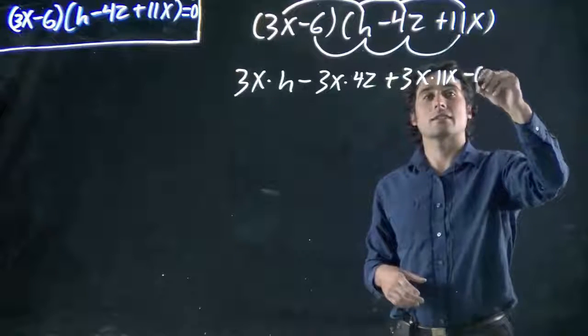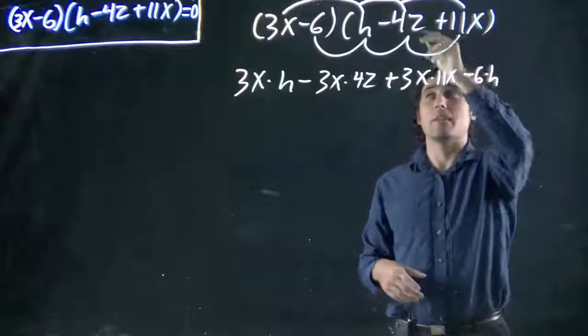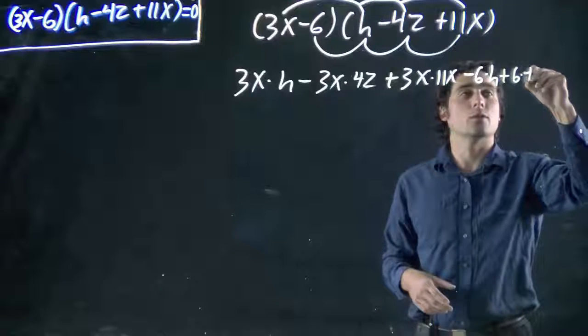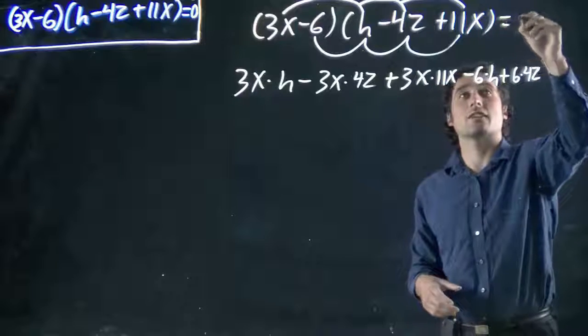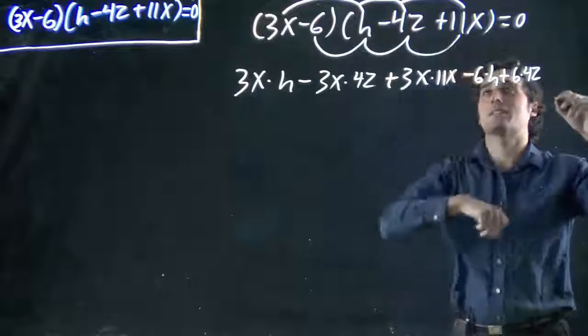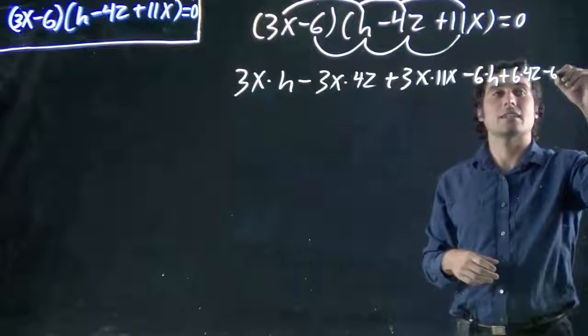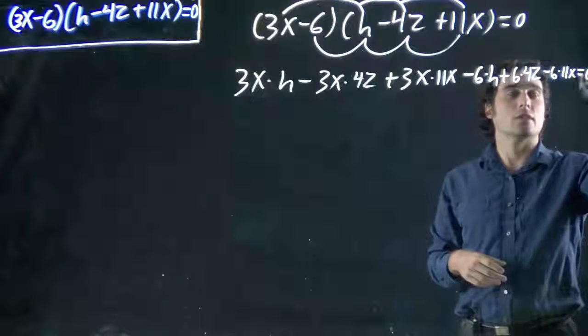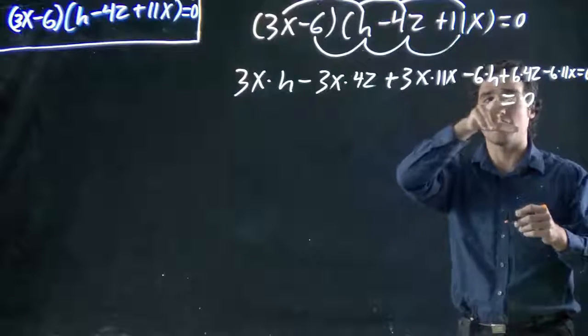Minus 6 times h. Then minus 6 times minus 4z. Minus and minus, remember, makes a plus. So plus 6 times 4z. Just write a little bit smaller. I forgot to say this—it's all equal to zero. So minus 6 plus 11x. A minus and a plus makes a minus. So minus 6 times 11x. All of this equal to zero.